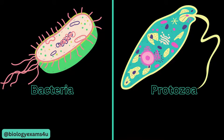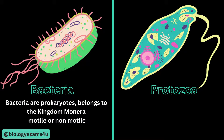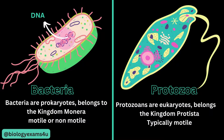Difference number one is regarding cell structure. Bacteria are prokaryotes and belong to the kingdom Monera according to the five kingdom classification proposed by Whittaker. As you can see, prokaryotes means the genetic material is not surrounded by a membrane. Whereas protozoa are eukaryotes — they have a true nucleus. This genetic material is surrounded by a nuclear membrane, and they belong to the kingdom Protista in five kingdom classification.